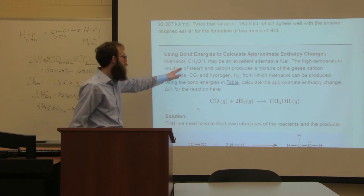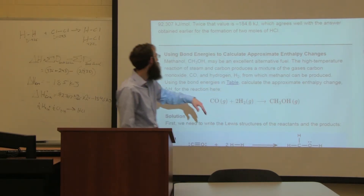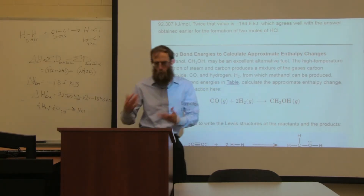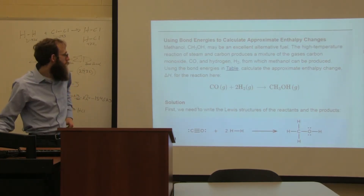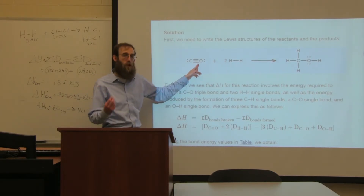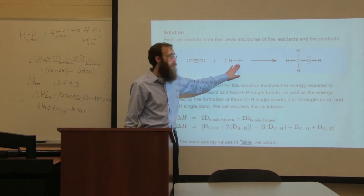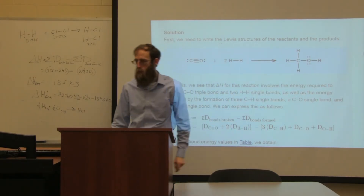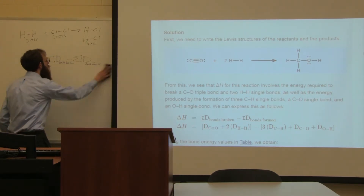As another example, we have carbon monoxide reacting with hydrogen gas to form methanol. In methanol, having drawn the Lewis dot structure, we can see a C-O triple bond in the CO reactant and two H-H bonds.